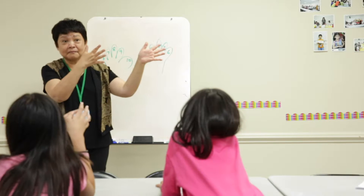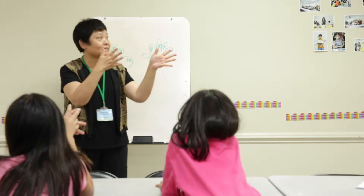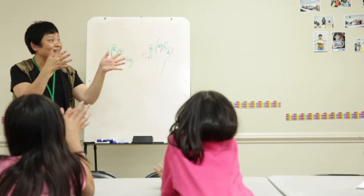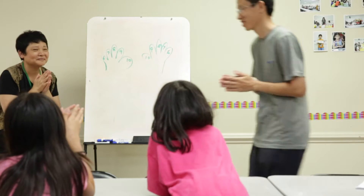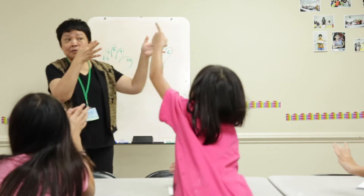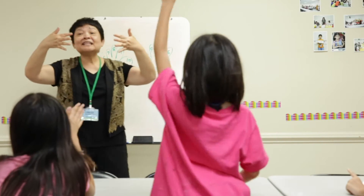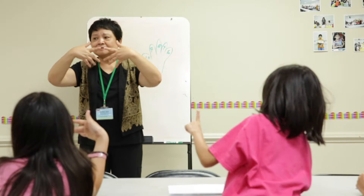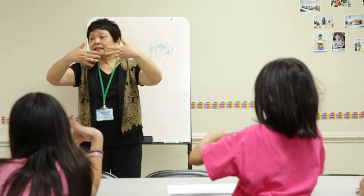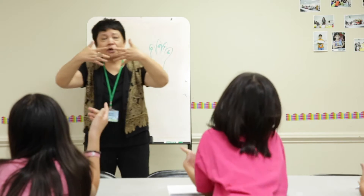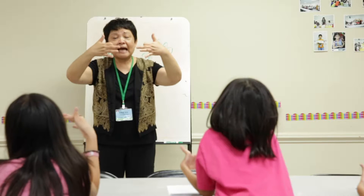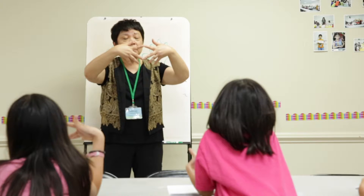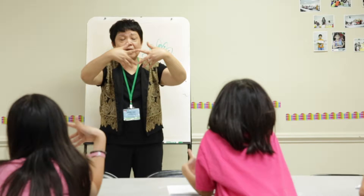If I say nine times nine, which finger represents the nine? This one, right? Okay, touch down. Nine — thumb is up, will be easier. All right: six, seven, eight, nine. Nine times nine equals 81.